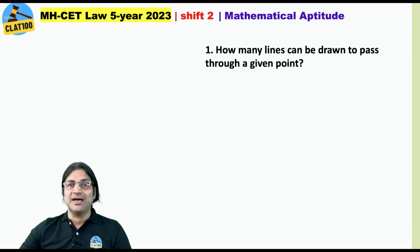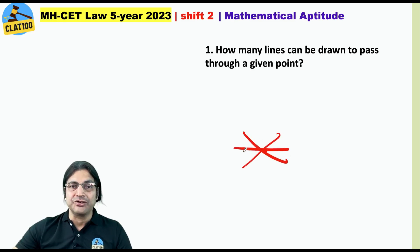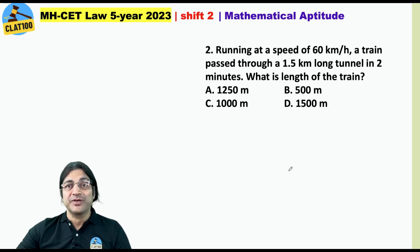Here is the first question: how many lines can be drawn to pass through a given point? Even if you have forgotten what you studied in school, just put a point and you can observe that you can draw as many lines through it as you wish. So the answer is infinitely many.